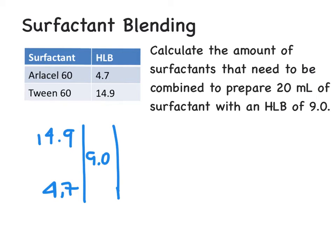So if we subtract the 14.9 minus 9, we get 5.9 parts. 9 minus the 4.7 is 4.3 parts. So that's a total of 10.2 parts. And we know that that is equal to 20 mL.